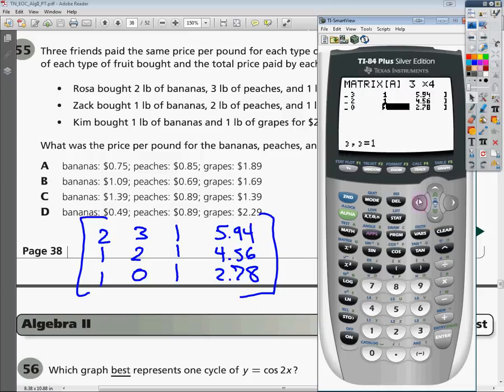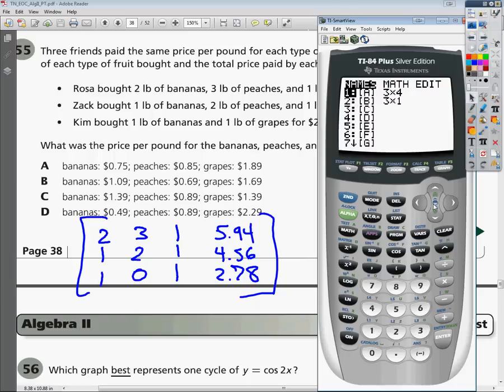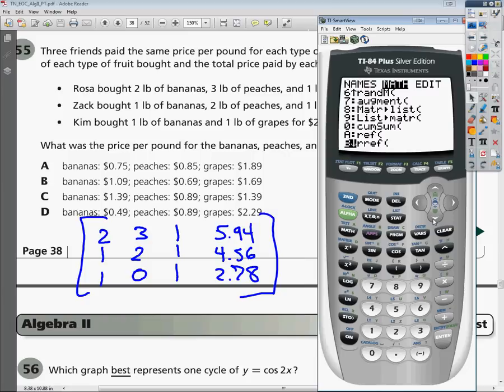Now I'm going to go back and look at it and make sure it's all right. I'm going to quit out so I can use the matrix. Go down to matrix again, and then I'm going to find the math that I'm looking for. If I click down, letter B here. It goes through 10 and then it's got A and B. B is RREF, which is reduced row echelon form.